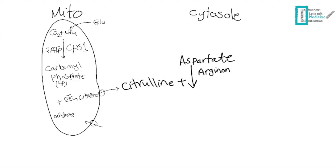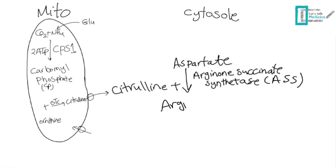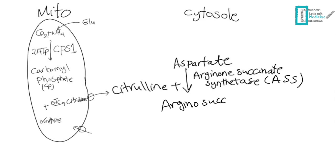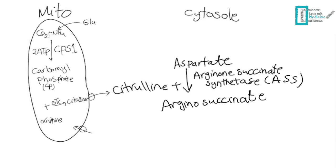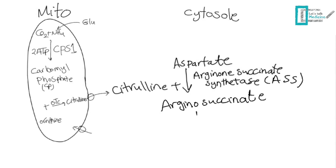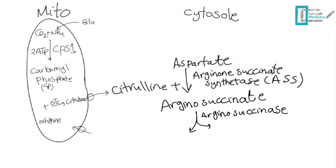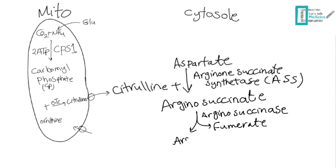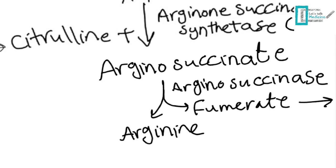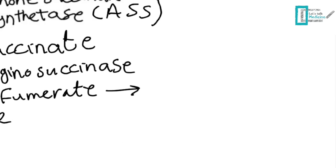In the cytosol, the third step occurs when citrulline combines with aspartate by an enzyme called argininosuccinate synthetase, or ASS. This gives us argininosuccinate, which is then acted upon by another enzyme called argininosuccinate lyase, giving us fumarate and arginine.